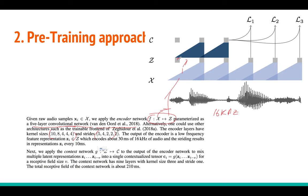The frame rate of z is lower compared to x because x is 16,000 samples per second. If the frame rate of z is 10 milliseconds, that gives 100 frames per second, since you are grabbing only 100 samples in one second. The whole idea is to reduce the dimensionality of the audio because the audio is very high-dimensional data.